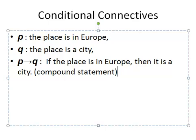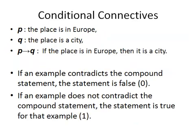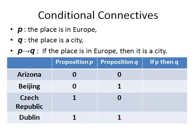If an example contradicts the compound statement then the statement is false, and we put a zero in the truth table. Otherwise, if it does not contradict the compound statement then the statement is true for that example.